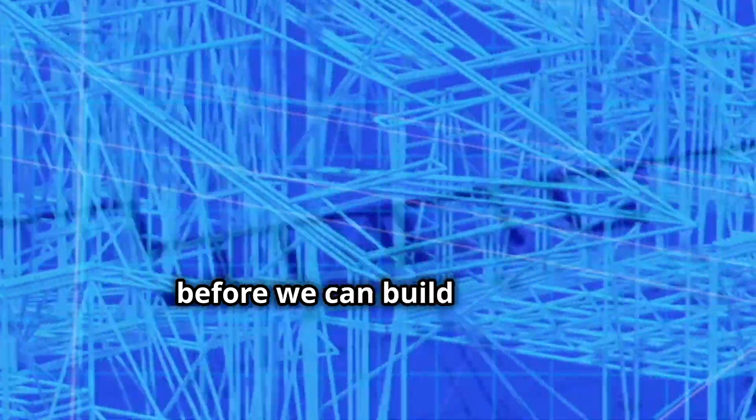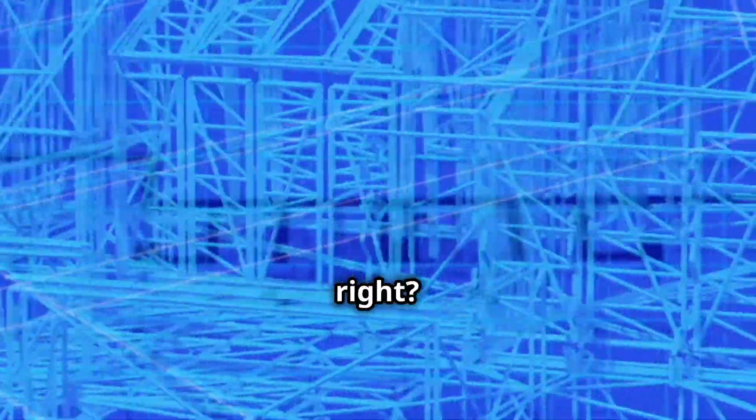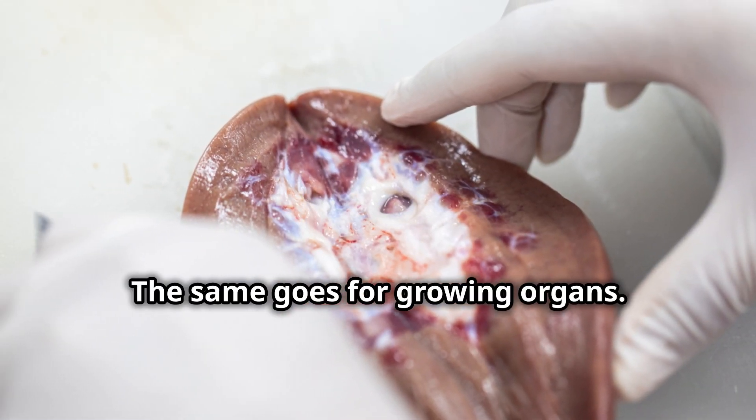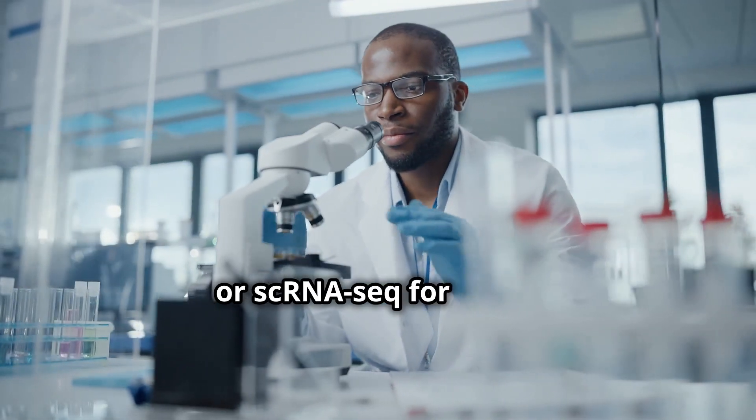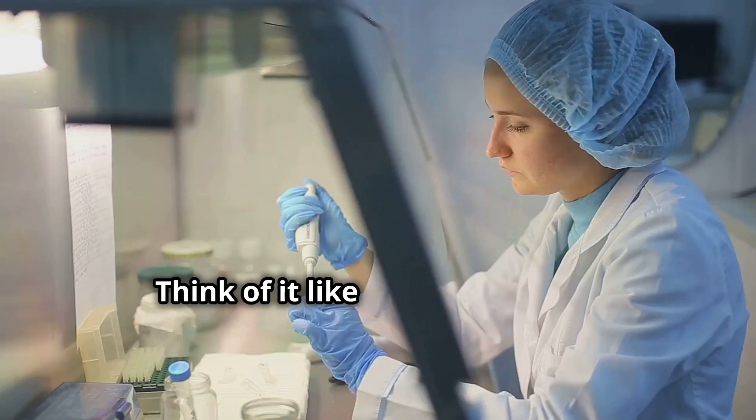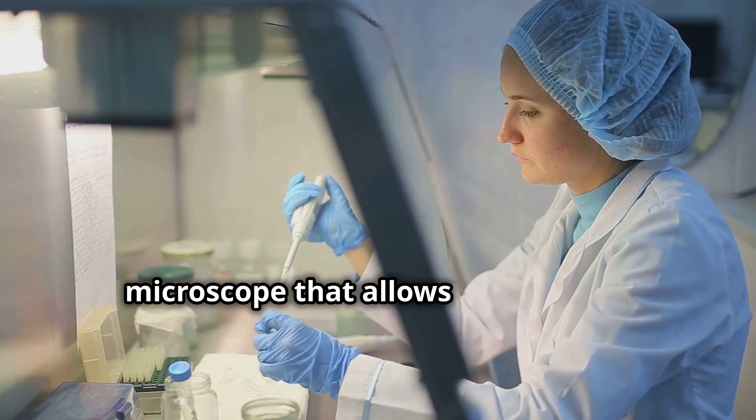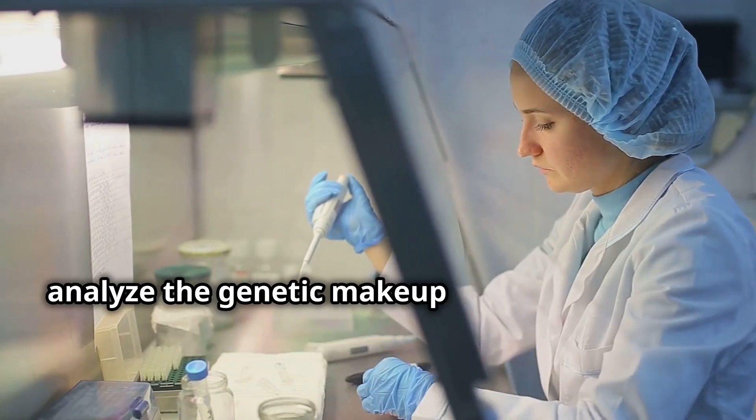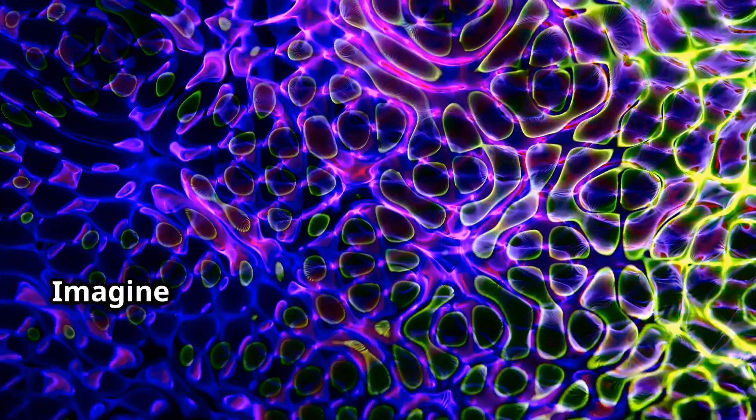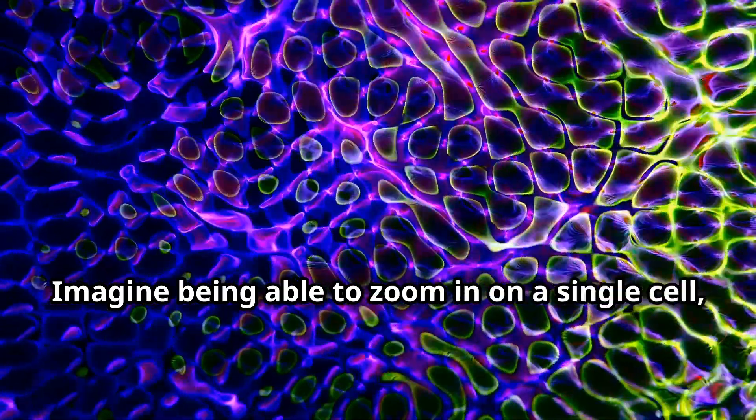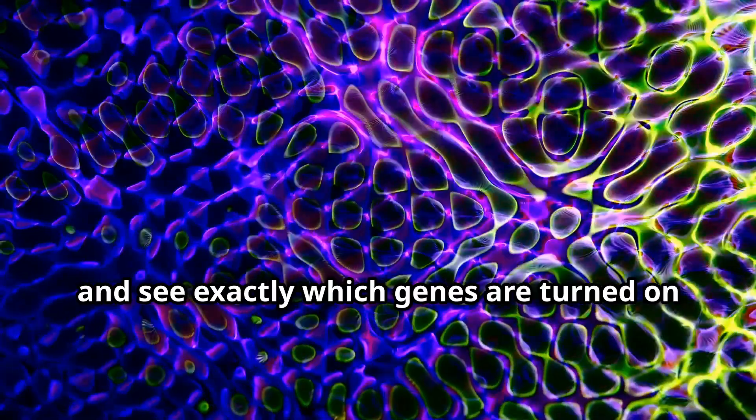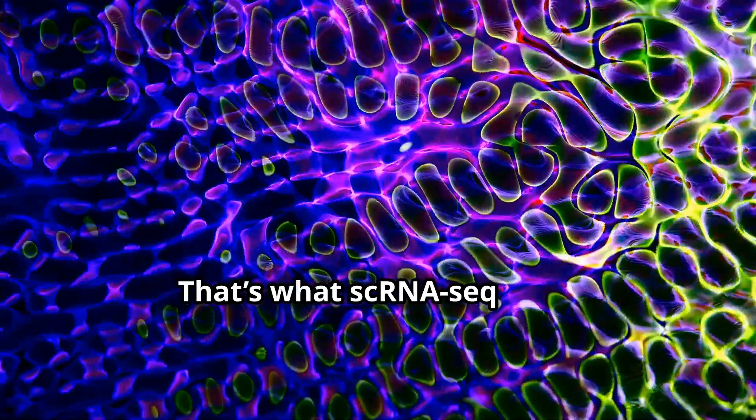Now before we can build a house, we need a blueprint. The same goes for growing organs. That's where single-cell RNA sequencing, or scRNA-seq for short, comes in. Think of it like a super-powered microscope that allows scientists to analyze the genetic makeup of individual cells. Imagine being able to zoom in on a single cell like a tiny little factory and see exactly which genes are turned on and off.